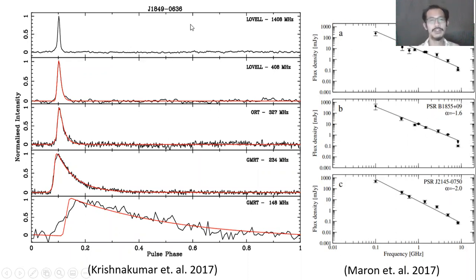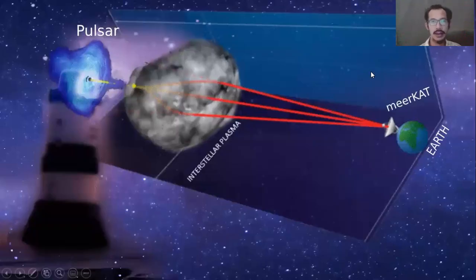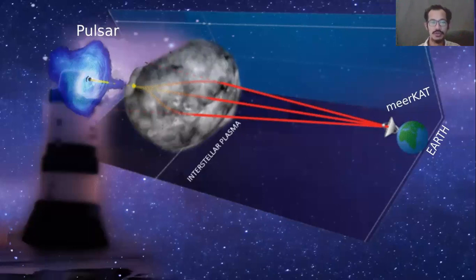And normally pulsars are timed at frequencies greater than one gigahertz. But as timing precision approaches the nanosecond level, we need to go down to lower frequencies to battle scattering where it is the strongest. So what do we do? Well, that's where I come in with my experiment. I've been analyzing data from the Meerkat radio telescope in South Africa in a way that allows us to hopefully probe the properties of the plasma on small scales.